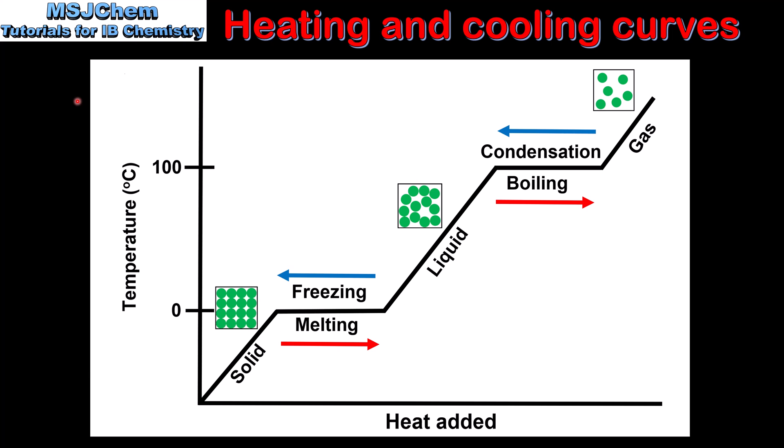We'll end the video by looking at a heating and cooling curve. On the y-axis we have temperature in degrees Celsius, and on the x-axis we have heat added. This example is for water, and we start on the bottom left with solid water which is known as ice.